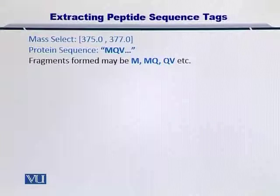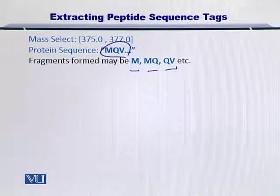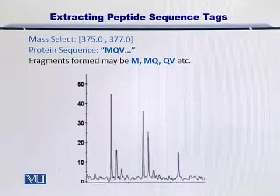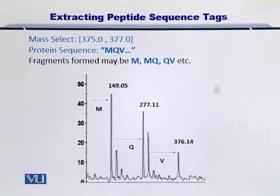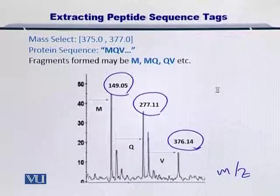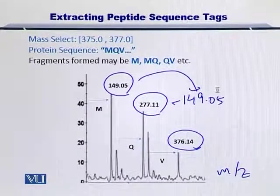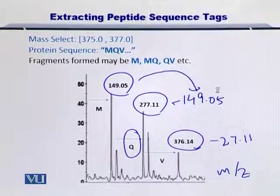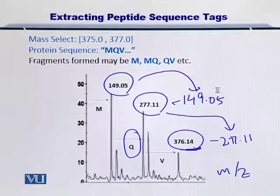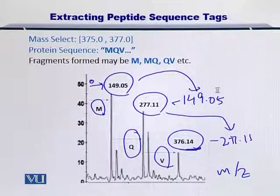Let me warm you up with an example. So this was our small protein that we were looking at and the possible fragments that were reported are given here. Of course, if the protein is bigger, then the number of possible fragments can be very large. Assuming that this is the spectrum reported from MS2, the first, second, and third mass-over-charge ratios are given here. If you subtracted these, then it gave you a Q, and if you subtracted 277 from 376 then it gave you a V. And of course in this case it's an M because it is starting from zero. So in this way you have obtained the amino acids that are there between the peaks.